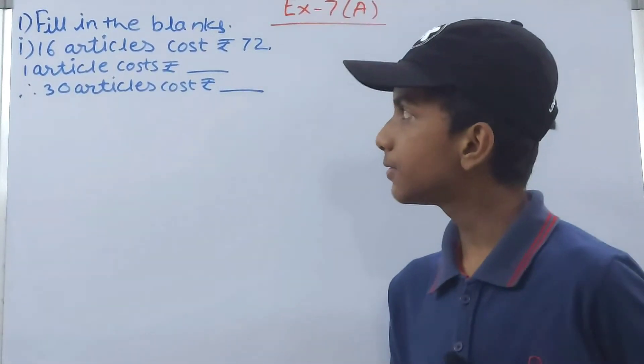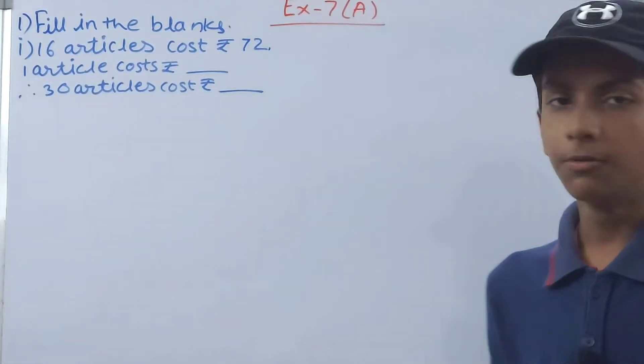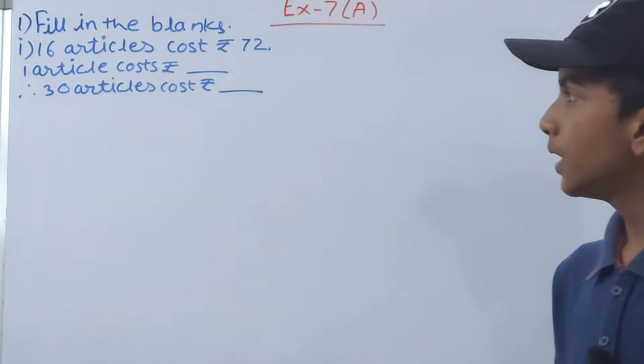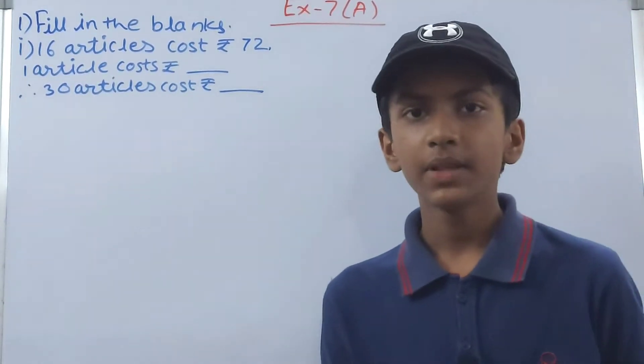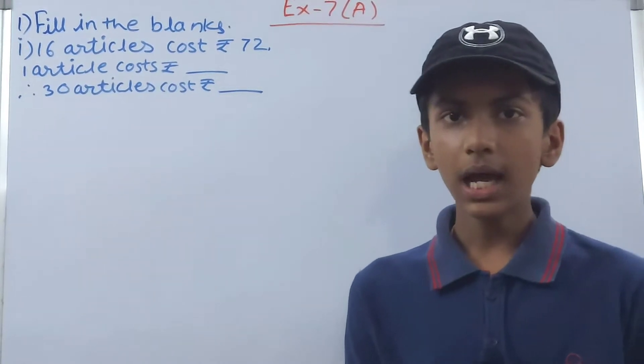You can see, first one is: 16 articles cost rupees 72. How much will one article cost? And second is: how much will 30 articles cost? This is very simple. This is based on direct variation and indirect variation.